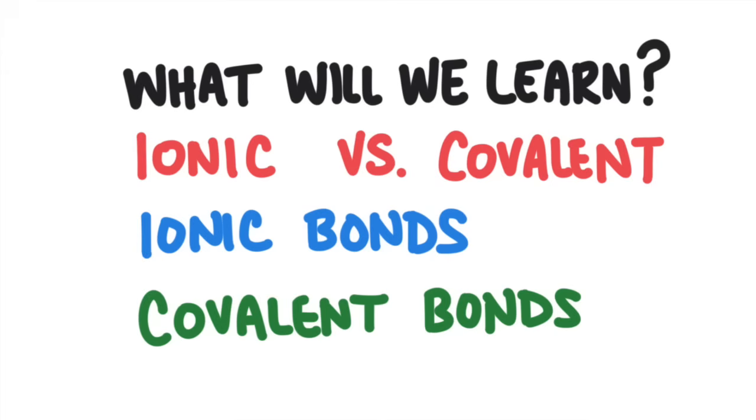We'll learn the difference between ionic and covalent bonds, and then we're going to talk all about ionic bonds and how they form, and then covalent bonds and how they form.